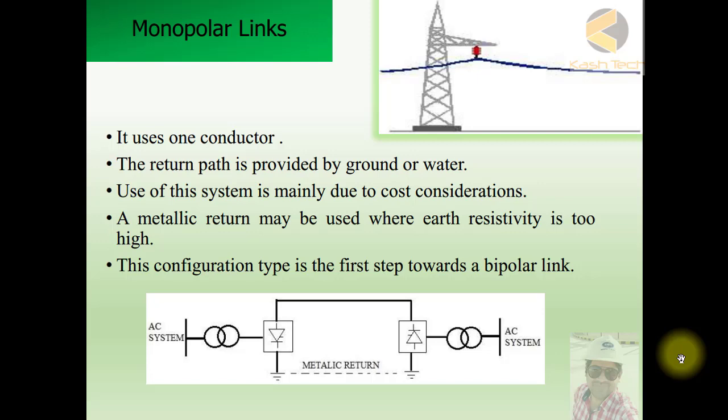If the resistance of earth or soil is less, so you can use soil as a return path. Whereas if the resistance of the soil is not less or high, then you can use a metallic return.